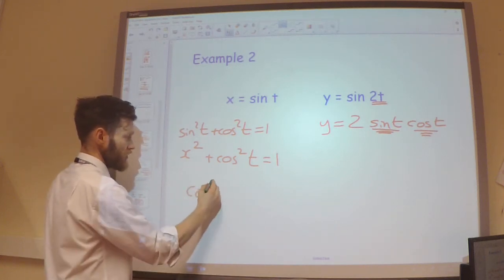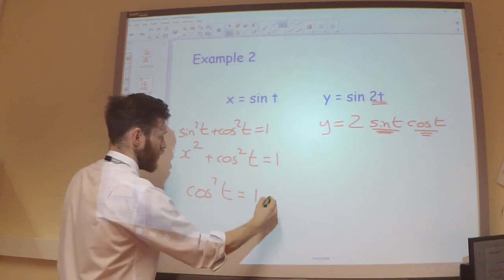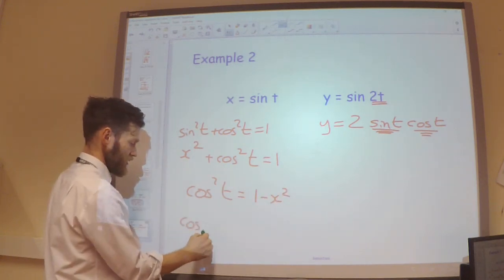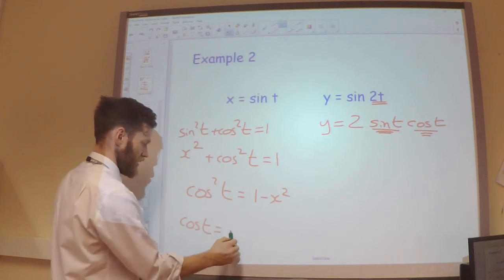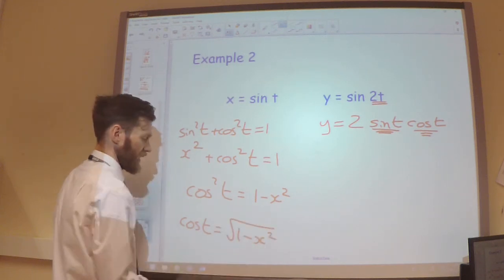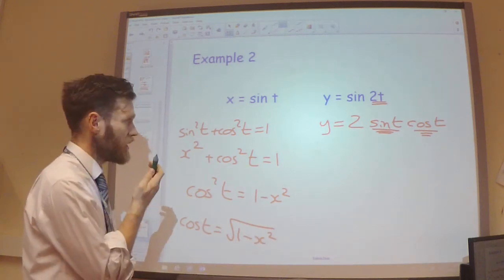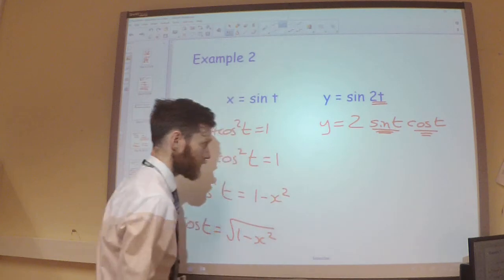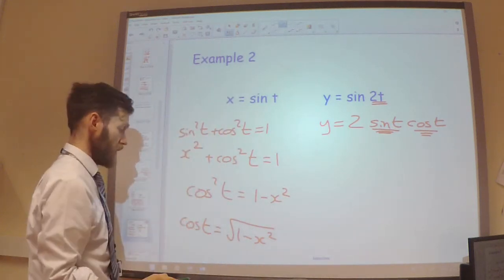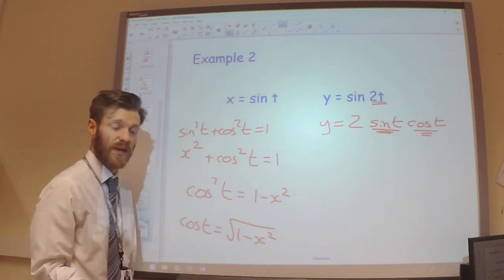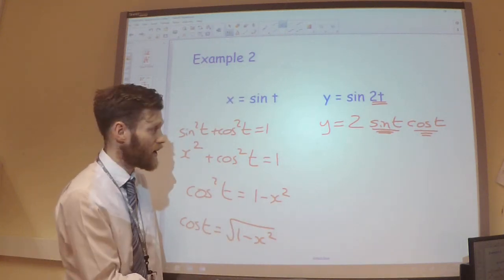So I'll get cos squared t is 1 minus x squared. So cos t is going to be root 1 minus x squared.